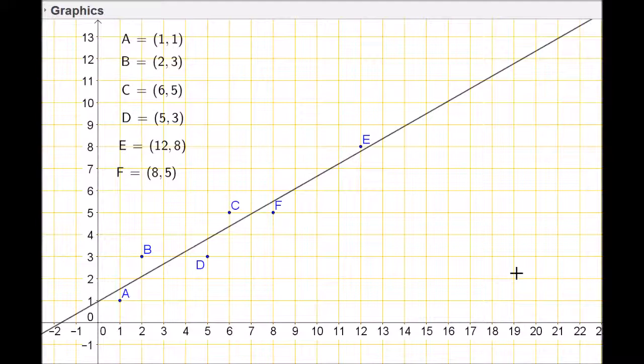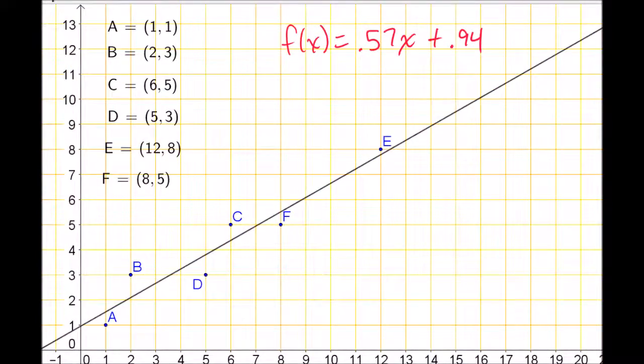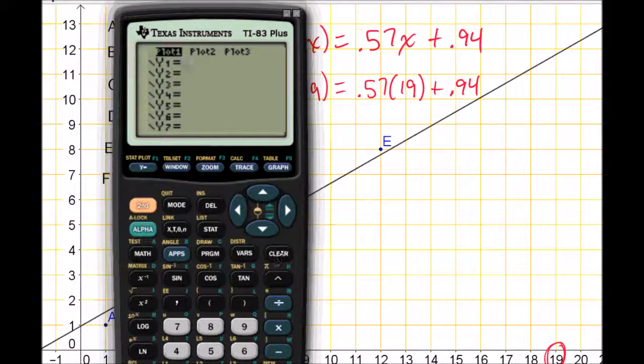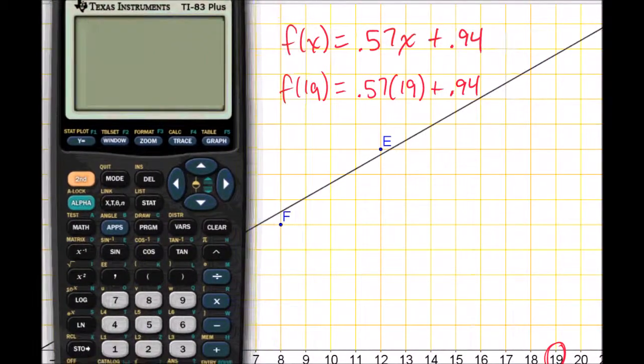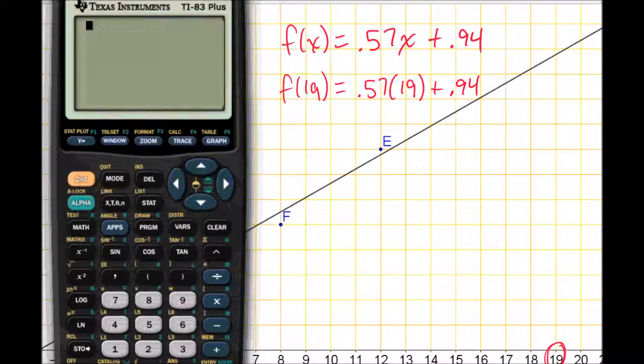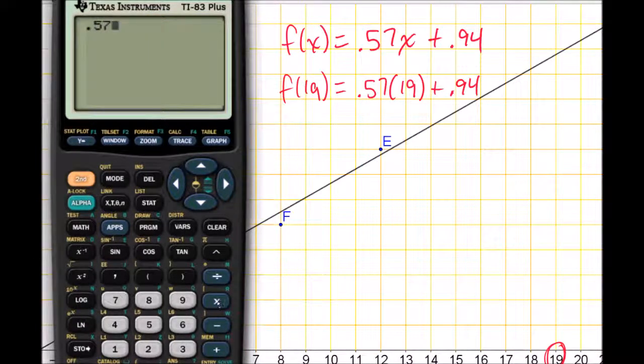How we would answer that question without just following the curve is we would consider the function. Let me calculate it. If we're interested in the number 19, I can evaluate this function by feeding the number 19 in for x. So f(19) equals 0.57 times 19 plus 0.94. If I evaluate this with the calculator, I get 0.57 times 19 plus 0.94, enter.